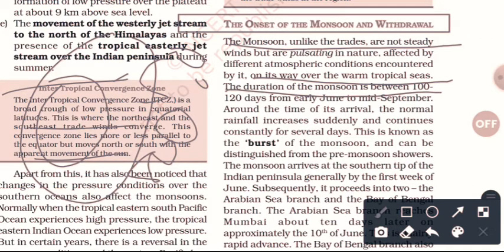The duration of the monsoon is approximately 100 to 120 days. The tenure of the monsoon is generally considered from the first of June to mid-September.